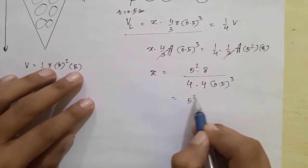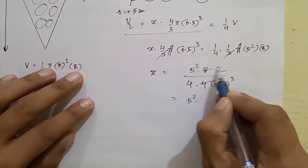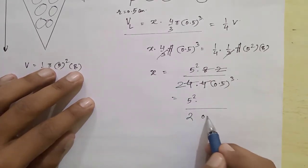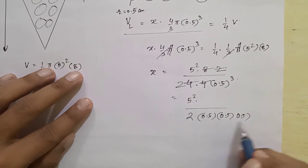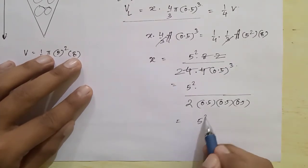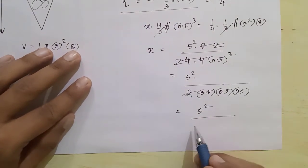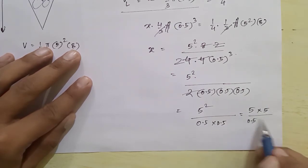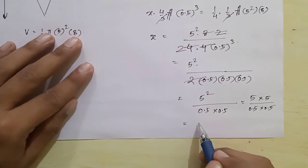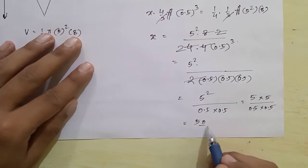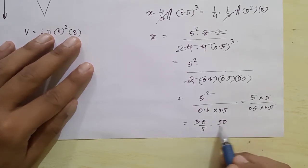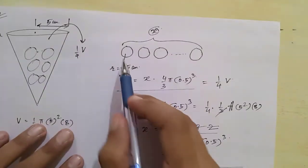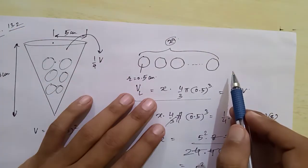This simplifies to 5² × 8 divided by 4, where 4 into 2 is 8 and 2 into 2 is 4, leaving 5² on top and 2 below. Then 0.5 × 0.5 × 0.5 simplifies further: 5 × 5 upon 0.5 × 0.5. Writing as decimals shifted: 50/5 = 10, so 10 × 10 = 100. There are 100 lead shots. If you drop 100 balls in, one-fourth of the volume flows out.